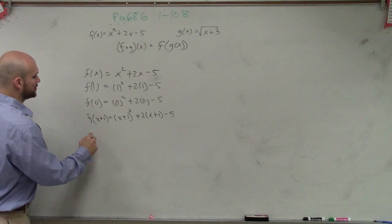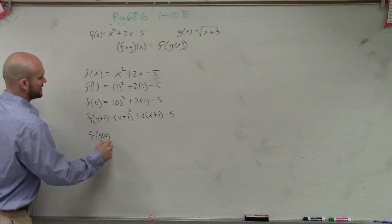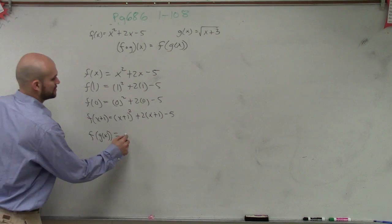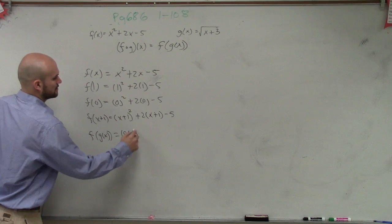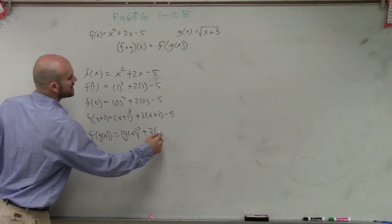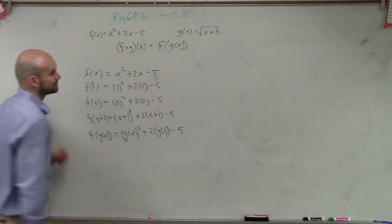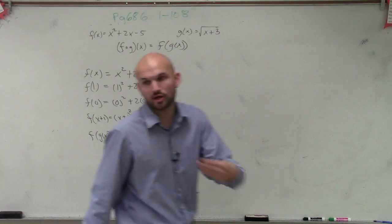So now what if I say put in f of g of x? Where do you put the g of x? The x's. Where are the x's? So it becomes g of x squared plus 2 times g of x minus 5. Now, and that's exactly all this is asking us to do.